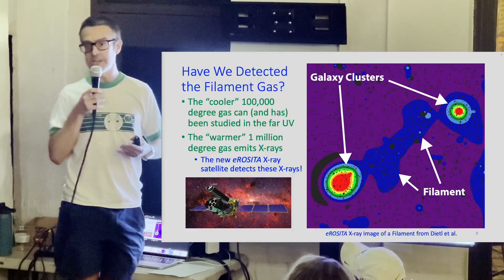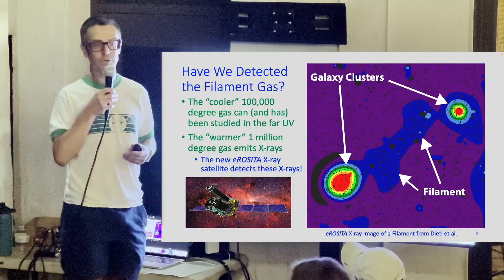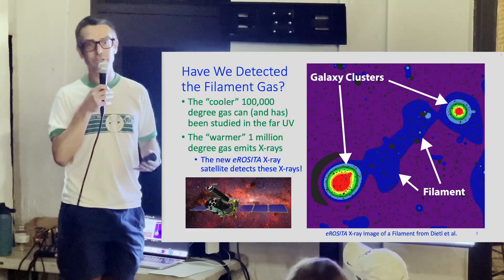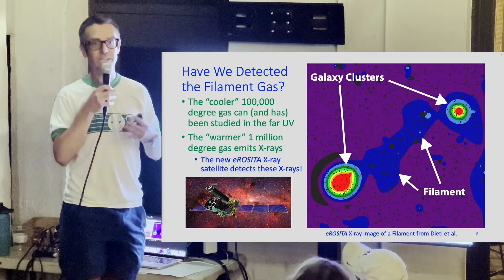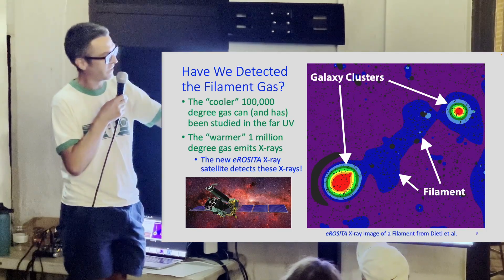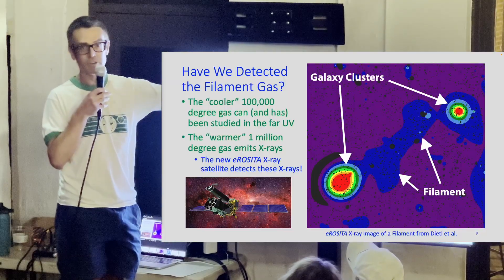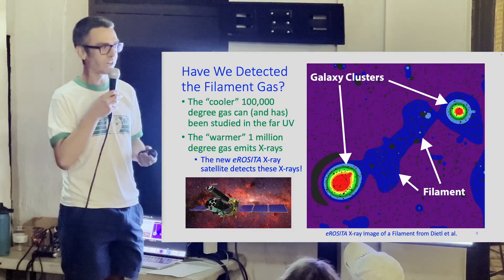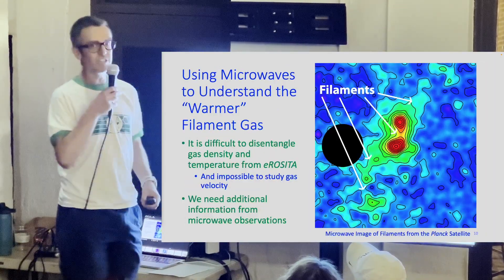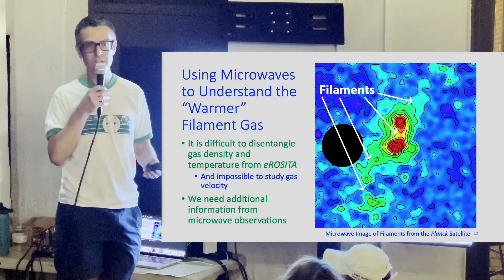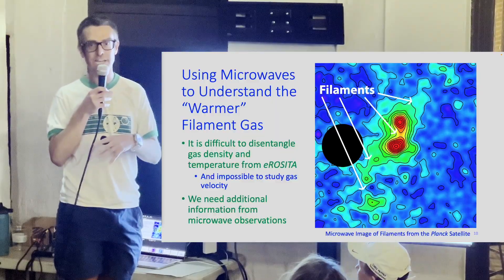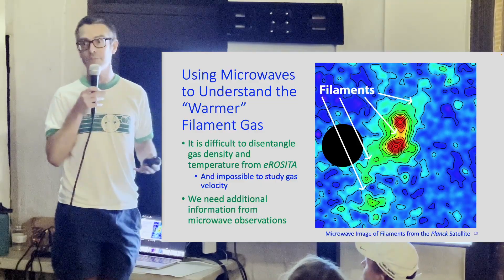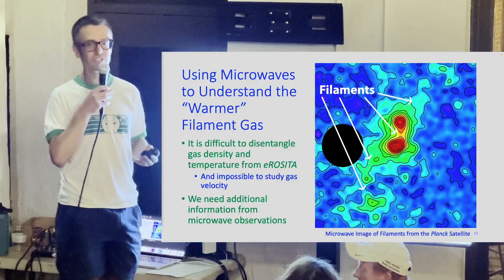There's a beautiful new X-ray mission called eROSITA that launched a few years ago. It's surveying the entire sky and has given us newfound sensitivity to filamentary structures. On the right is an example image: two galaxy clusters connected in blue by a filament that eROSITA detected. But the issue is it's difficult to disentangle physical properties — separating the density from the temperature of the gas is really hard with X-ray data alone, and there's no way of figuring out the velocity structure of this gas.